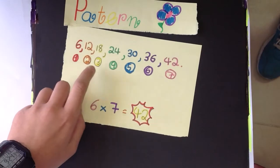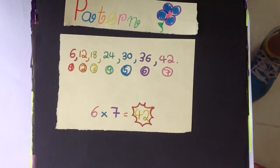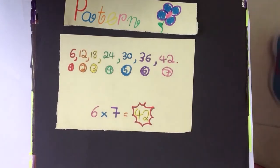1, 2, 3, 4, 5, 6, 7. So 6 times 7 equals 42.